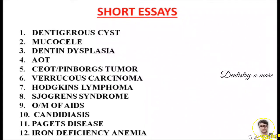The third question is dentine dysplasia. If you look into the chapter on developmental disturbances, along with amelogenesis imperfecta and dentinogenesis imperfecta, dentine dysplasia is another important question you must learn. It is usually asked as a short essay, whereas amelogenesis imperfecta and dentinogenesis imperfecta are listed among long essays, already discussed in Part 1.